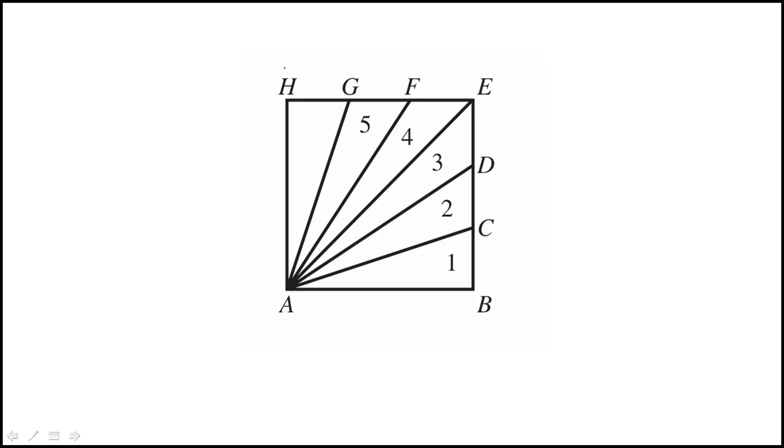So here we're told this is a square, so that length is equal to that. And then we're also told BC is equal to CD equal to DE, and then these two are also equal: EF, FG, and GH.